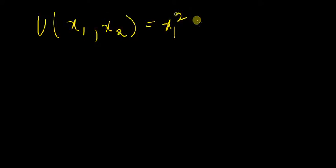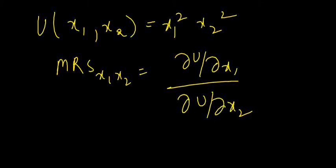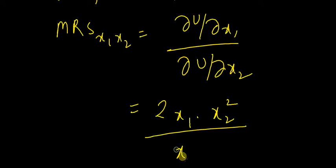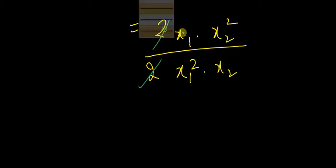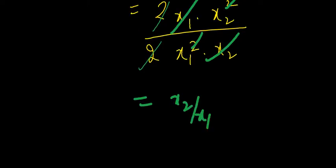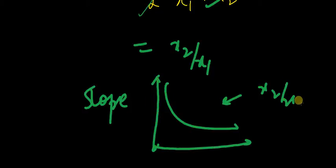Continuing with MRS. I have the utility function as x1 squared x2 squared. The MRS of x1, x2 will be given by ∂u/∂x1 divided by ∂u/∂x2, which would be 2x1·x2² divided by x1²·2x2. Solving this, I get x2 by x1. So the slope of the curve x1²x2² is x2 by x1.